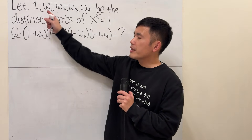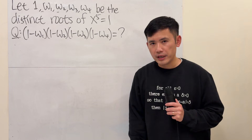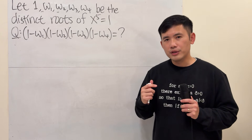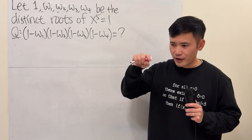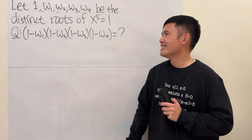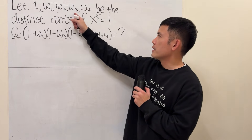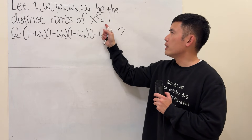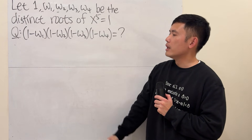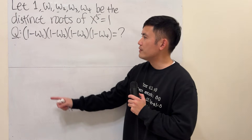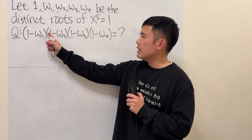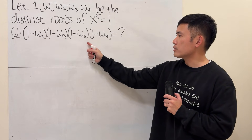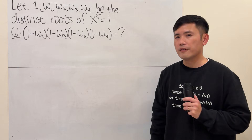Let 1, omega 1, omega 2, omega 3, and omega 4 be the distinct roots of x to the 5th power equals 1. Here, omega is the Greek letter omega — it looks just like W but curved. The question asks us to evaluate the product: (1 minus omega 1) times (1 minus omega 2) times (1 minus omega 3) times (1 minus omega 4).